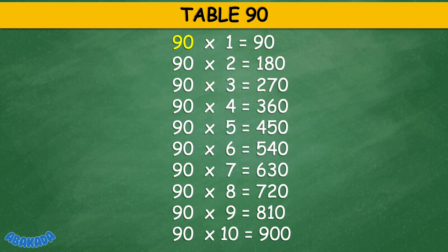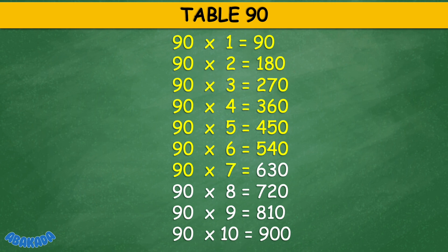Table 90: 90 times 1 equals 90, 90 times 2 equals 180, 90 times 3 equals 270, 90 times 4 equals 360, 90 times 5 equals 450, 90 times 6 equals 540, 90 times 7 equals 630, 90 times 8 equals 720, 90 times 9 equals 810, 90 times 10 equals 900.